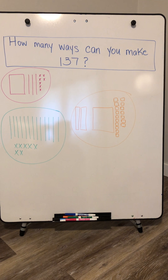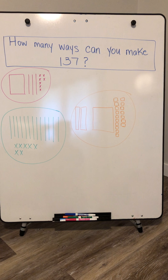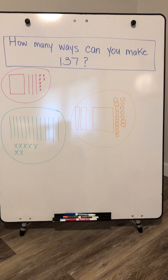This shows what a question might look like after three groups of students have visited. They've all worked with some base ten blocks at that question and come up with three different ways to represent the number 137. Now the fourth group comes to this question, looks at what the previous three groups have done, and tries to answer it in a way that's totally different and hasn't been done yet.